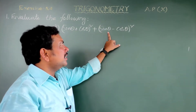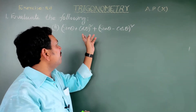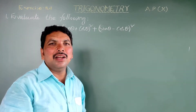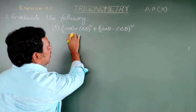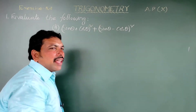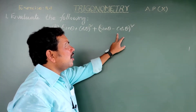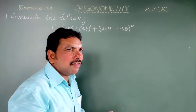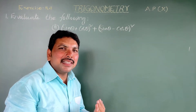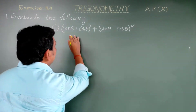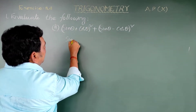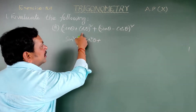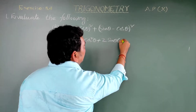What is the value of (sin theta + cos theta)² plus (sin theta - cos theta)²? This is in the form of (a+b)² and (a-b)². Using the formula, (a+b)² = a² + b² + 2ab, we get sin²theta plus cos²theta plus 2 sin theta cos theta.